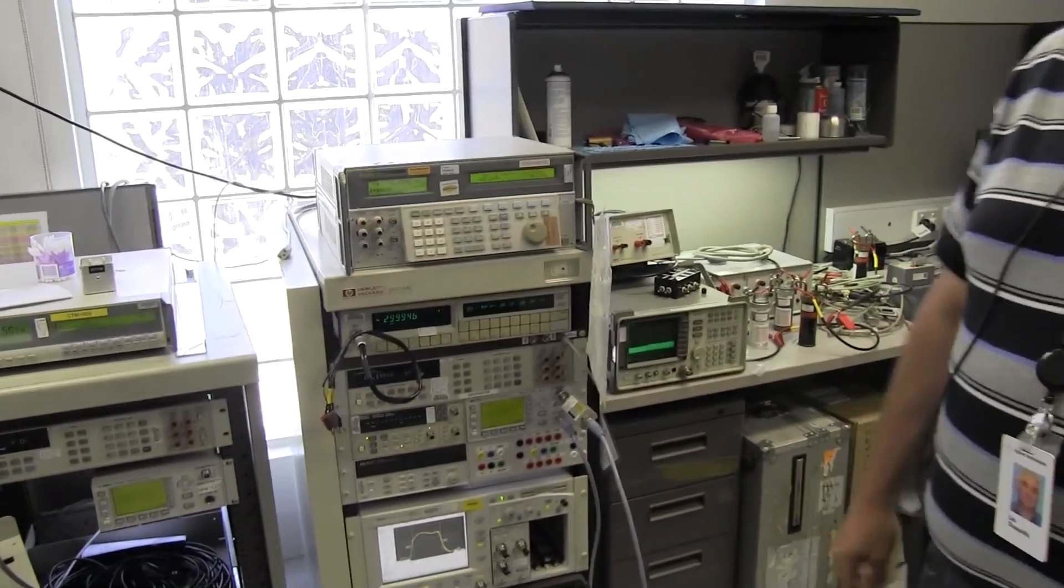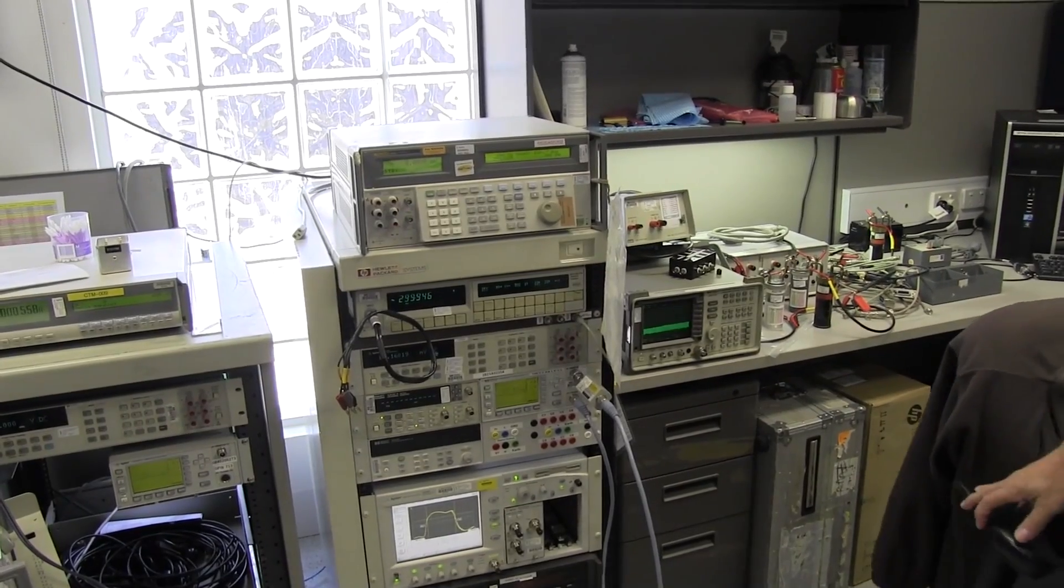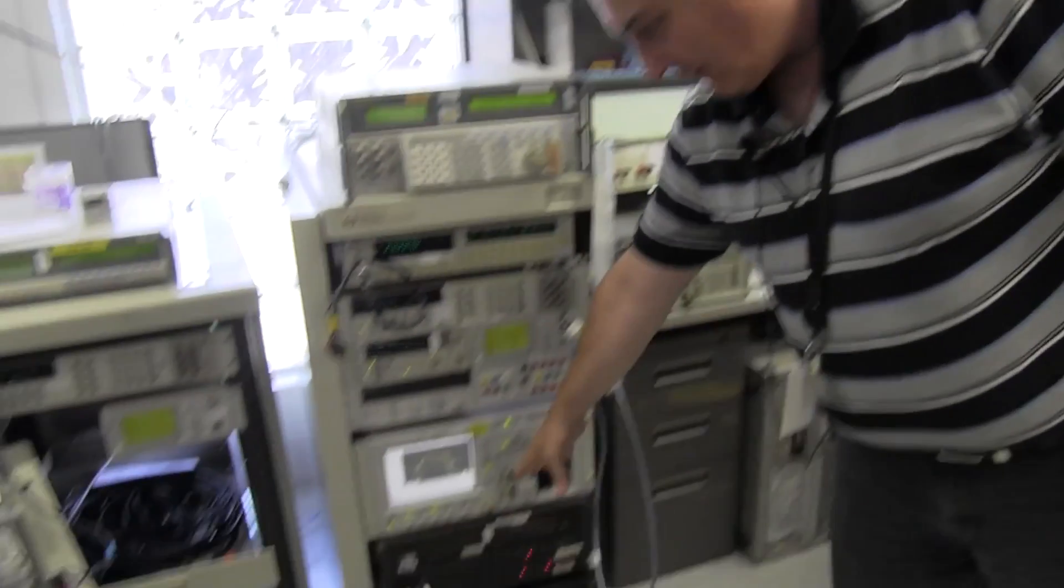Alright, take it away Les. He's going to tell us all about the rack which calibrates the calibrators. Well, basically you've summed it up. There was a need by Agilent customers to be able to calibrate a calibrator, be it a Fluke like this one here, a Daytron like the older models down there, Wavetech, whatever they wanted.